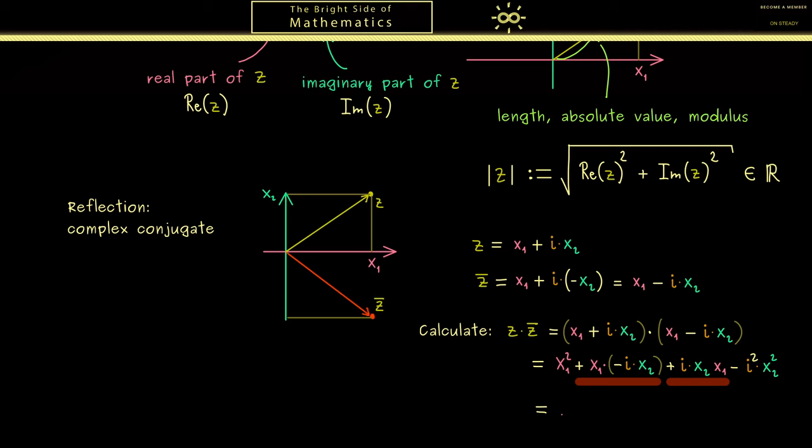So what remains is simply x₁ squared plus... And there you should see i squared is minus 1. So we have minus 1 times minus 1 which is plus. Hence we also have x₂ squared.